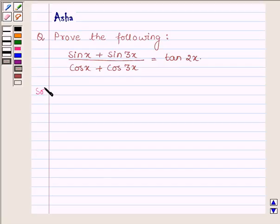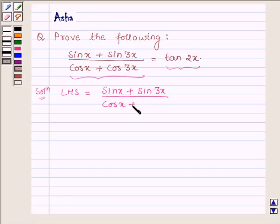So let us begin with the solution and we will solve the left hand side of this problem and show that it is equal to tan 2x. So left hand side is sin x plus sin 3x upon cos x plus cos 3x.